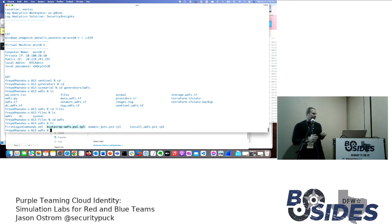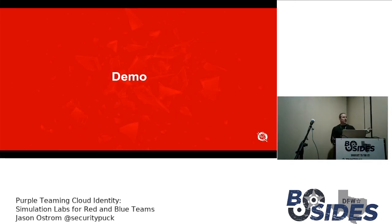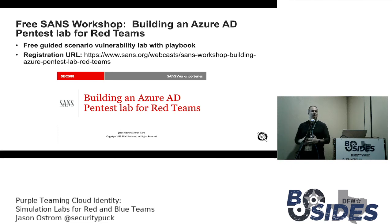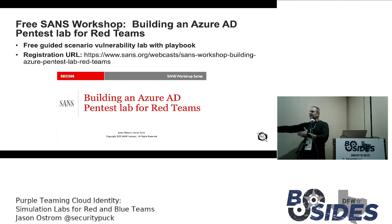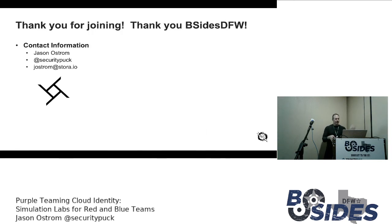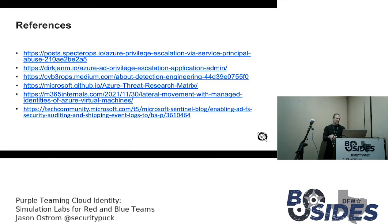Thank you to B-Sides DFW for putting all this together. Here's a free SANS workshop — a guided vulnerability lab scenario with Azure Active Directory. You can register for the two-hour workshop, and it downloads a VM with a playbook on how to run the attack. You'll create your own Azure AD pen test lab, attack it, run recon with PowerShell commands, do privilege escalation with PowerShell, all in Cloud Shell. I'll also post the slides out on Twitter and add them to the GitHub repo in a slides directory.